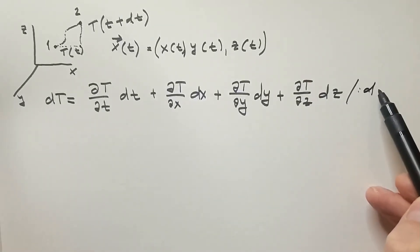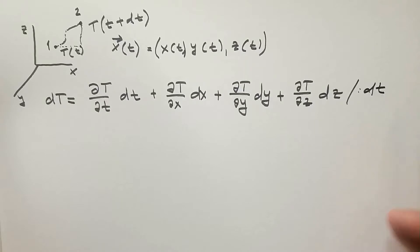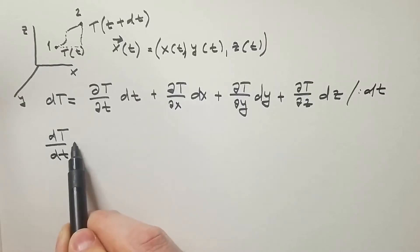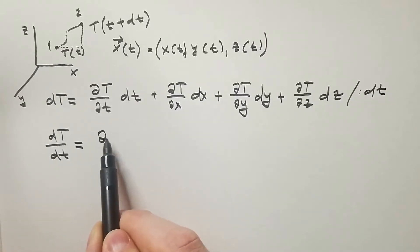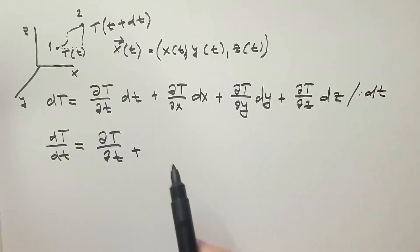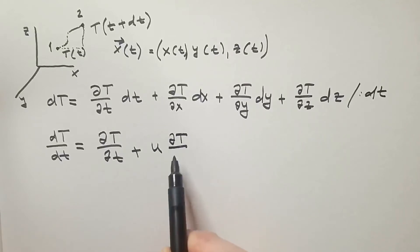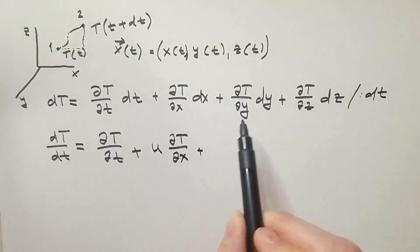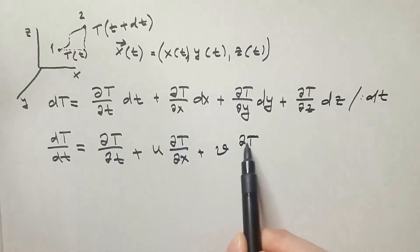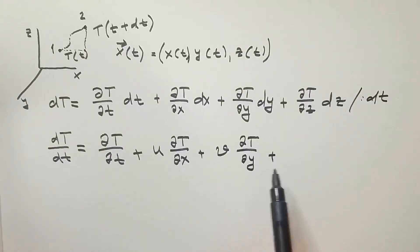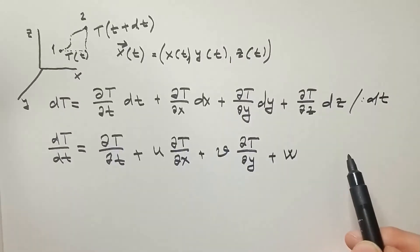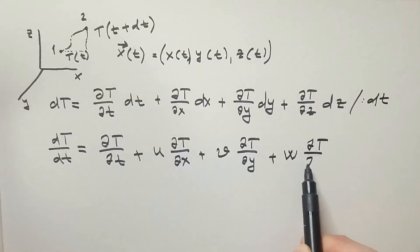Now, I will divide this with dt and I will get that dT/dt is equal ∂T/∂t plus dx/dt is u, ∂T/∂x plus dy/dt is v component of velocity ∂T/∂y and plus dz/dt is the w or vertical component of the velocity ∂T/∂z.